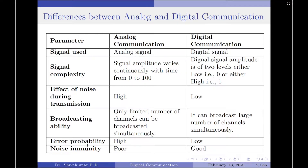Let us start with the first parameter, that is the type of signal used. Quite obviously, analog communication uses analog signals whereas digital communication uses digital signals. Talking about the signals, let us now take the next parameter, which is the signal complexity.